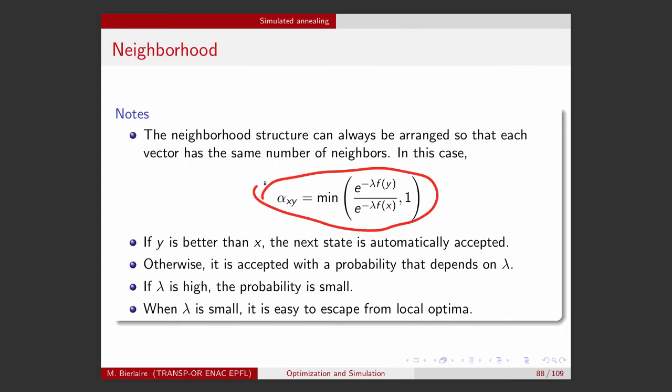Note that if the candidate y is better than x — meaning its objective function value is lower — the next state is automatically accepted with probability one. Otherwise, it is accepted with a probability that depends on lambda and on the value of f. If lambda is high, the probability is small. When lambda is small, it is easy to escape from local optima.